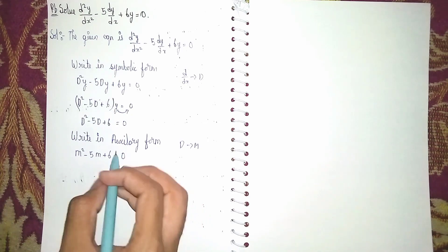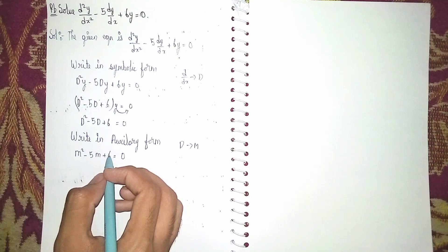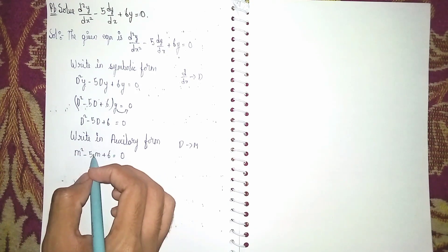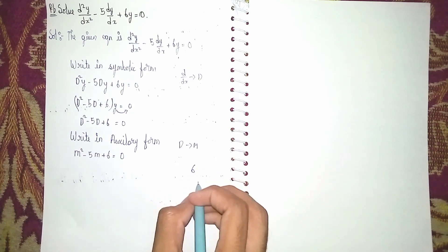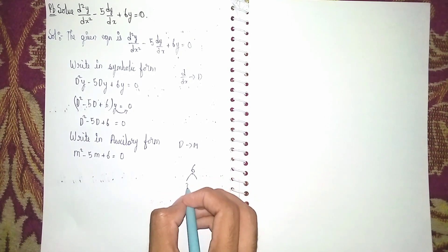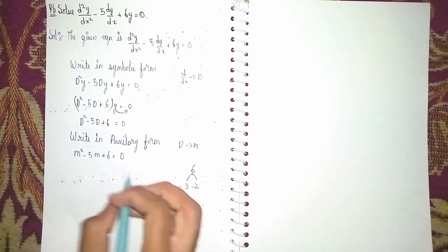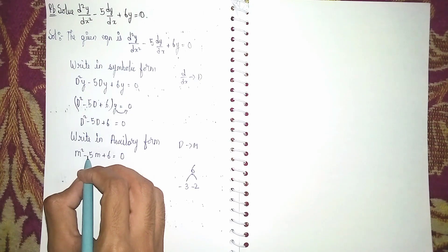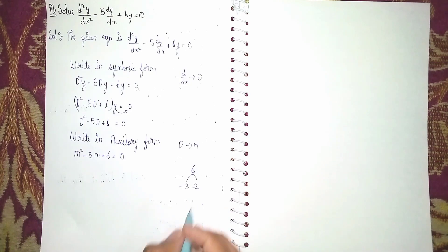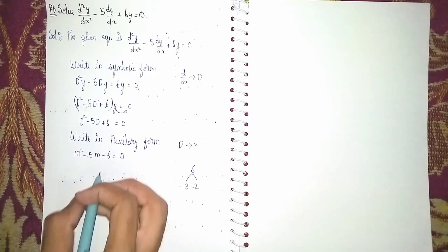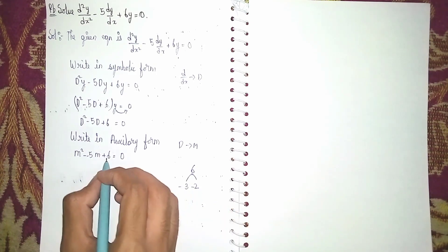Now I am using the factorization method, splitting the middle term. For the first and last terms, we need factors of 6. Six can be written as 2×3. With minus signs, minus 3 and minus 2 multiply to give plus 6, and add to give minus 5. So the signs are correct.